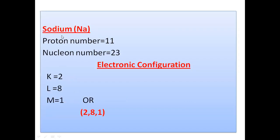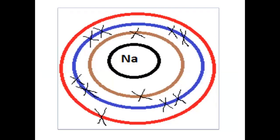For the sodium atom, which has proton number 11 and nucleon number 23, the electronic configuration is 2, 8, and 1. The first shell (K shell) has 2 electrons, the second shell (L shell) has 8 electrons, and the third shell (M shell) has 1 electron. The K shell has 2 electrons, the second shell takes 8 electrons, and the remaining 1 electron goes to the third shell (M shell).